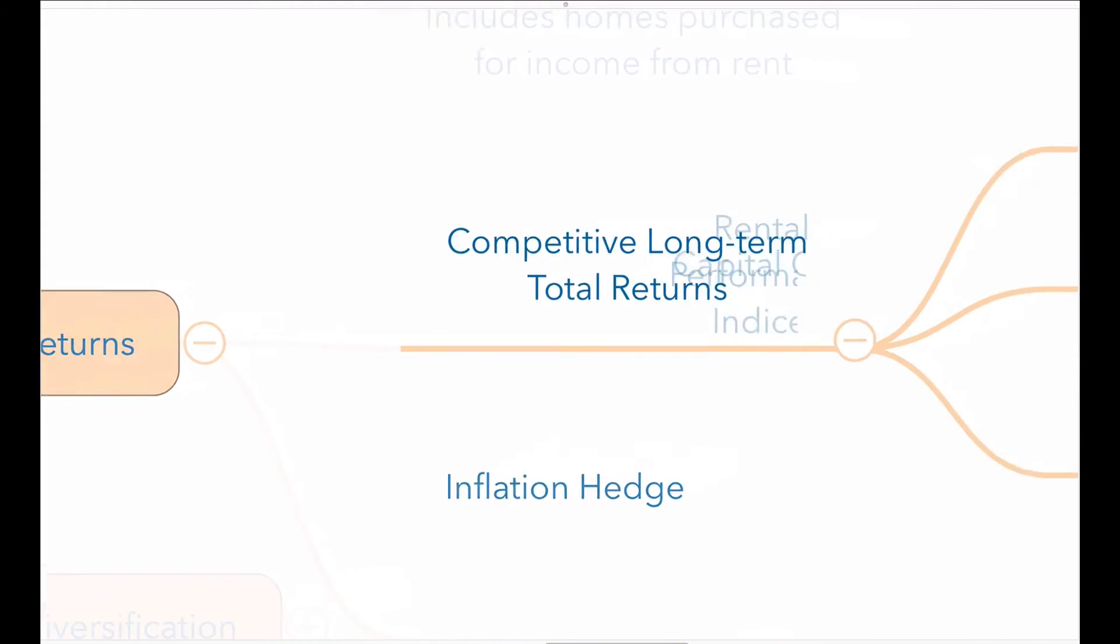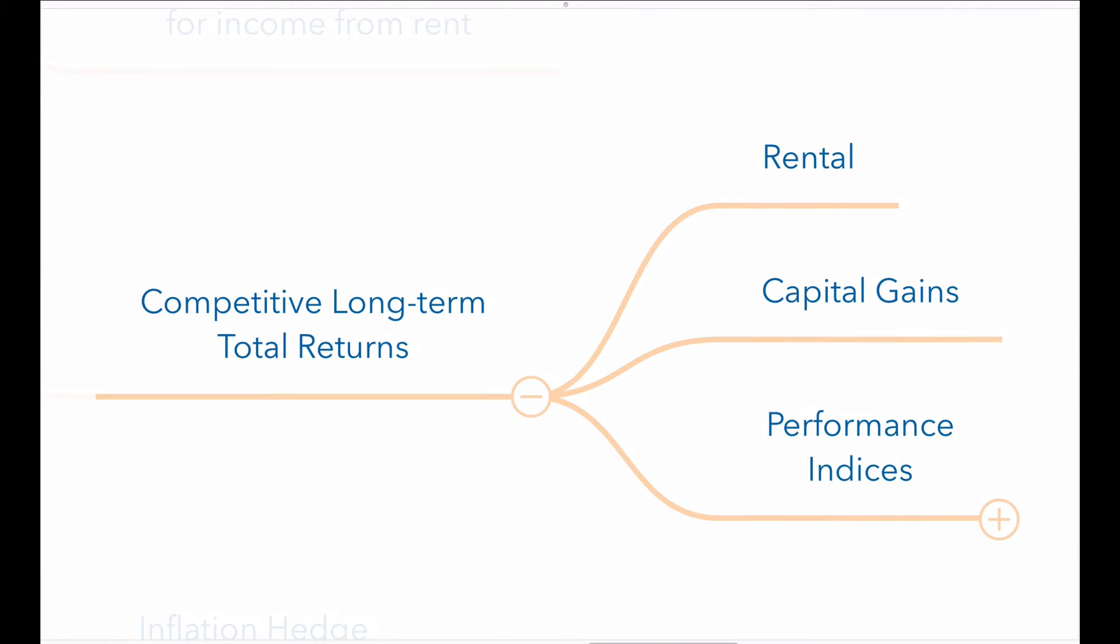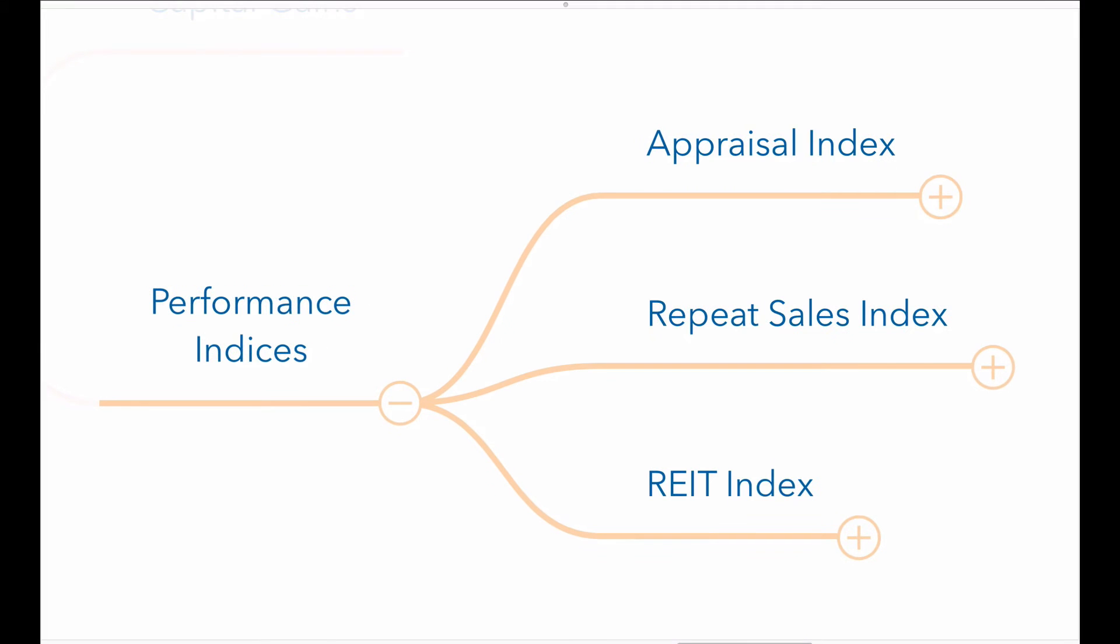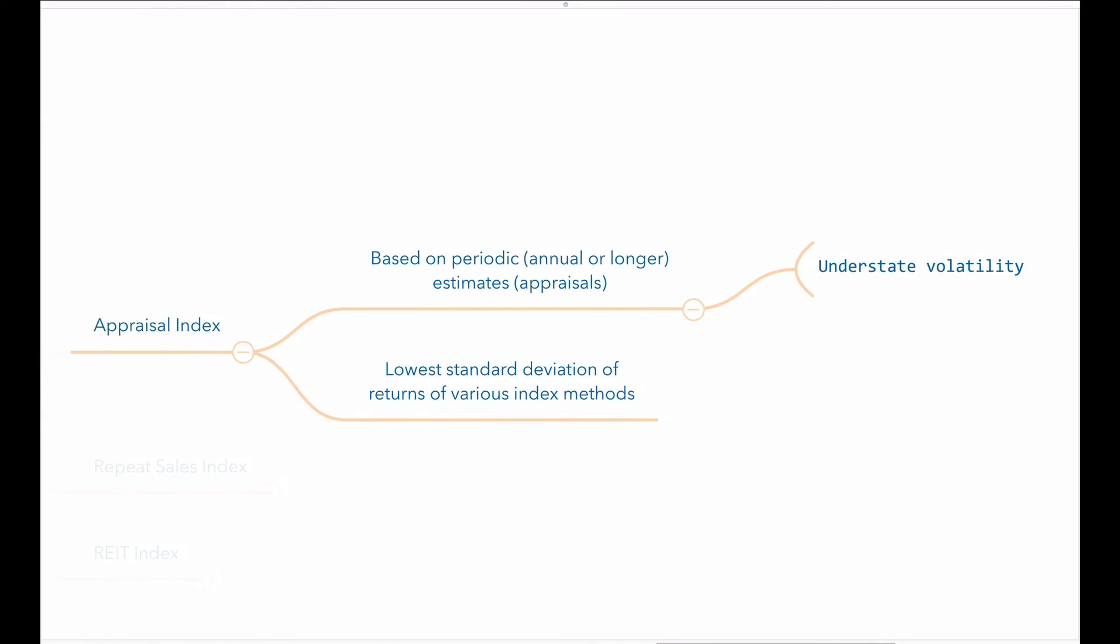Real estate performance is measured by three different types of indices. Appraisal indices use estimates of value or appraisals as inputs to the indices. These appraisals are done periodically, often annually, but some appraised values included in an index may be from more than one year earlier. Because of this fact, appraisal indices often understate volatility and have the lowest standard deviation of returns amongst the three index methods.